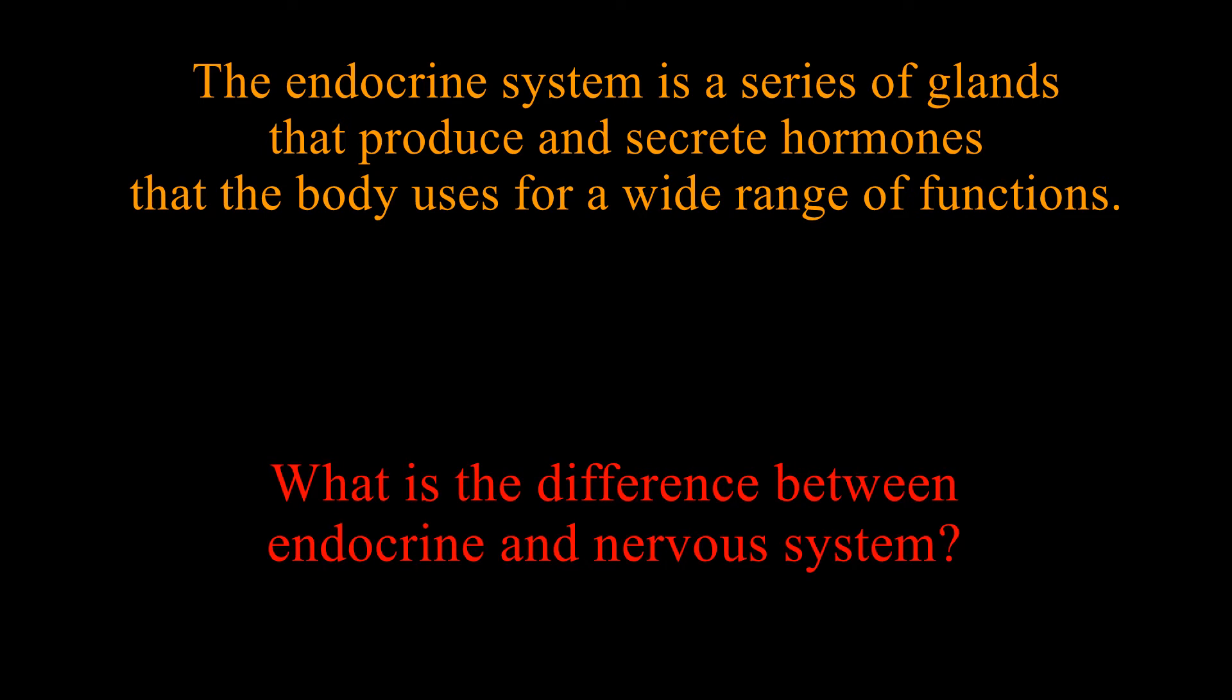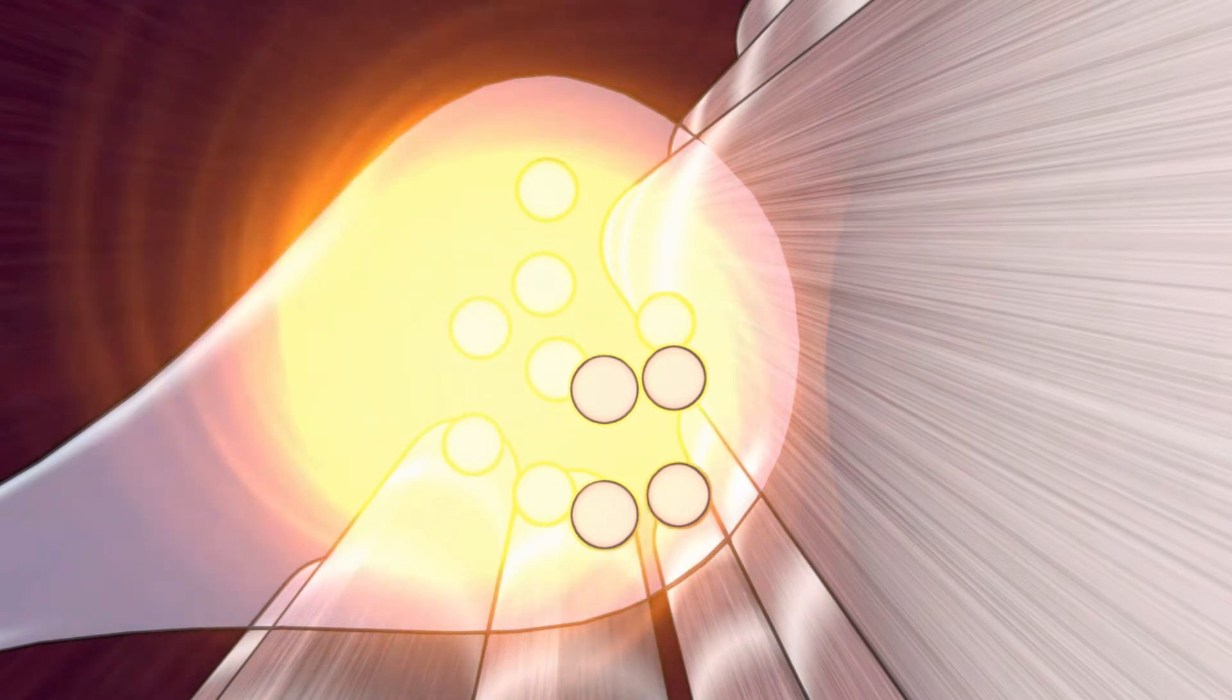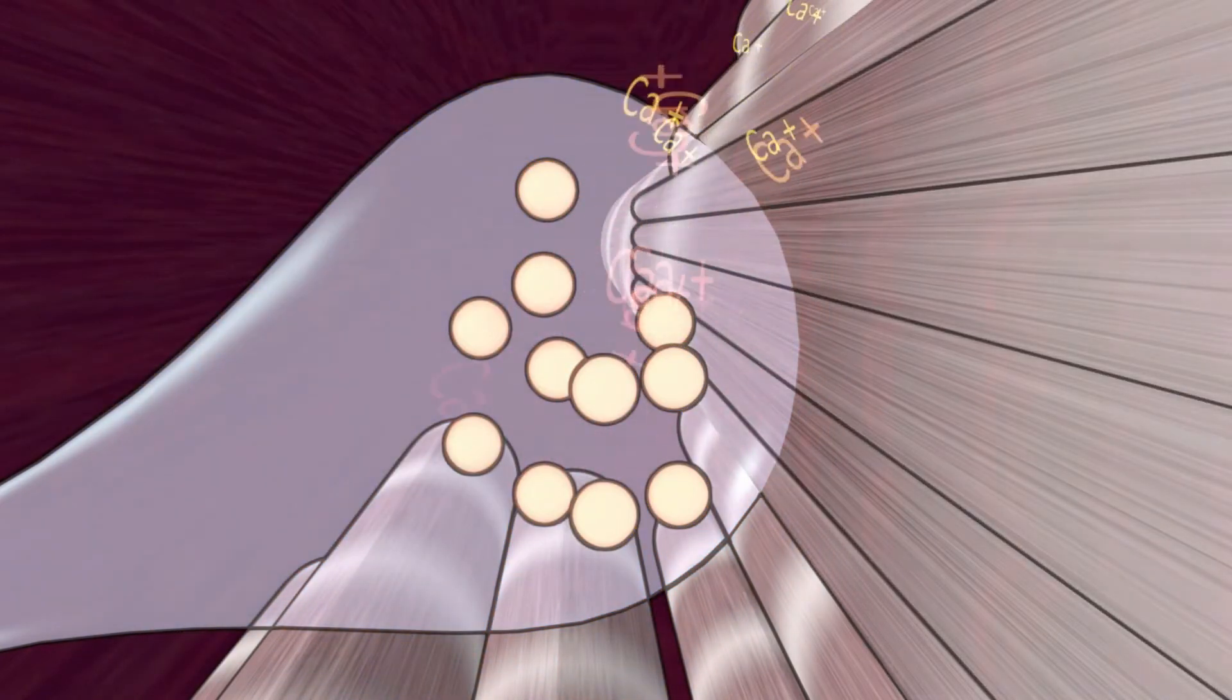So what is the difference between the two systems? The nervous system will send signals to reach neurotransmitters at the synapses, which are released and cross the synaptic cleft to reach and act on the target cells.